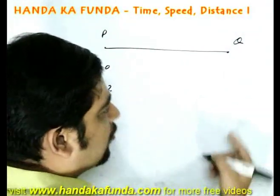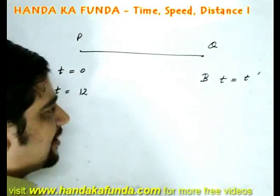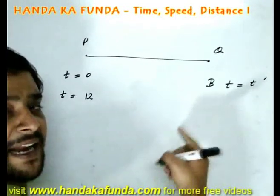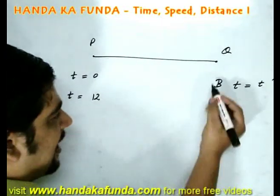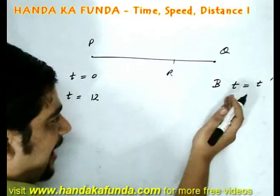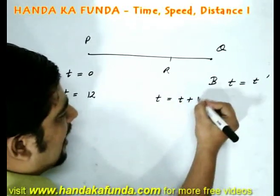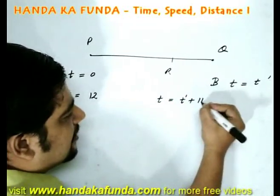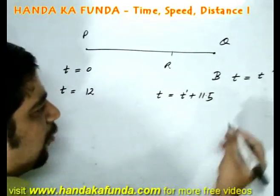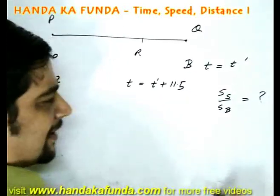His friend, who is standing at Q, hears the first bullet at a particular time, let us say T'. He hears the second bullet at T' plus 11.5 minutes. Now, why will that happen? That will happen because B would have moved to a different point and he would have come closer. The question is, what is the ratio of the speed of sound to the speed of B?